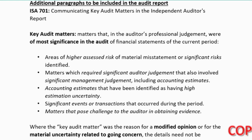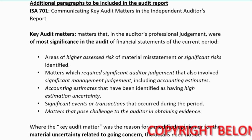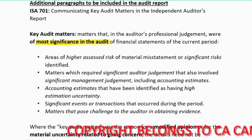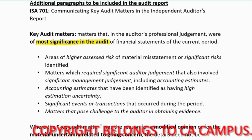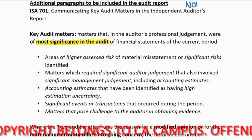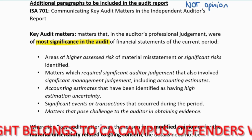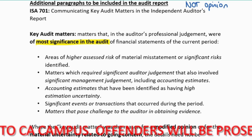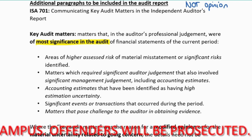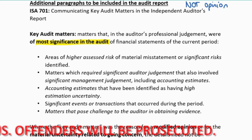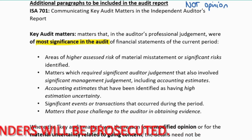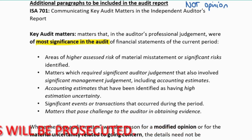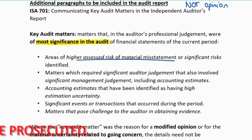Additional paragraphs we will include: ISA 701 Key Audit Matters. Anything that we believe as an auditor is crucial or has significant impact on the audit, we want to highlight in our audit report. Just make note - this is not us changing our opinion. I give my opinion - unqualified, qualified, adverse, or disclaimer - and then I might want to highlight some crucial information picked up through doing the audit, such as anything where we had a higher risk of material misstatement.